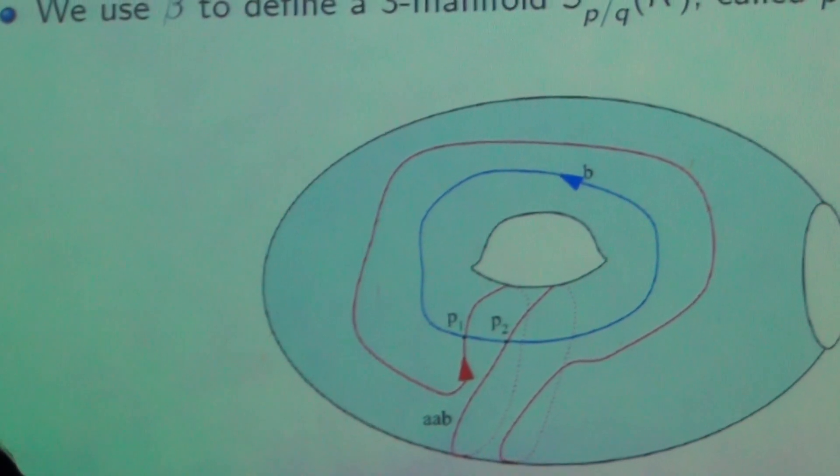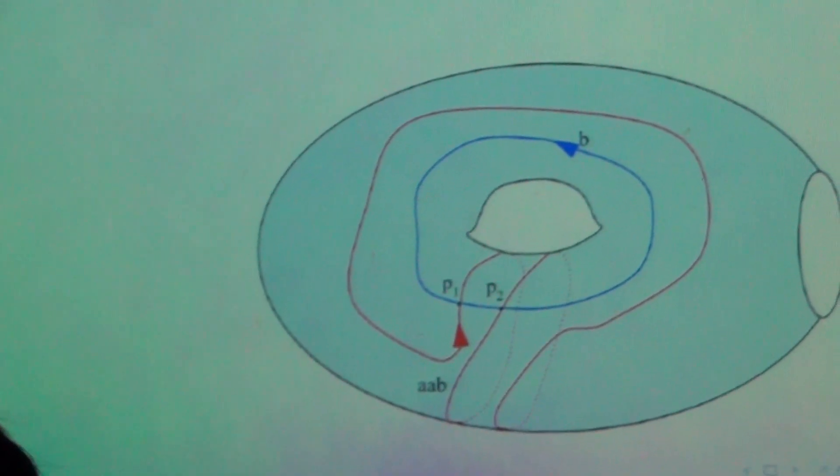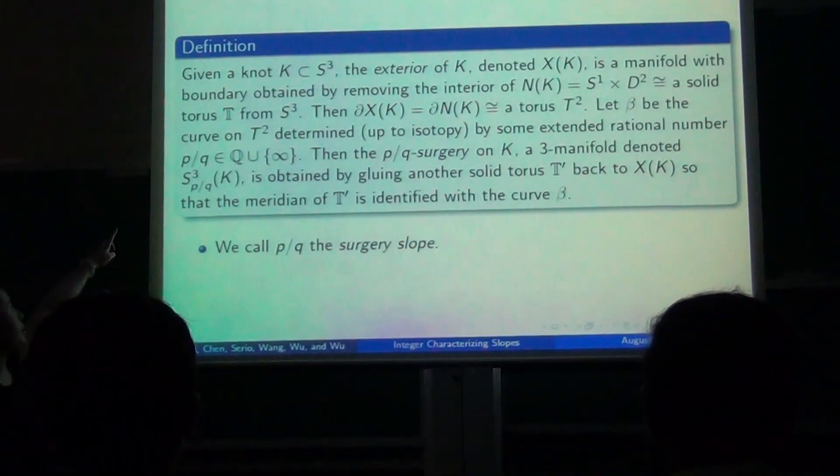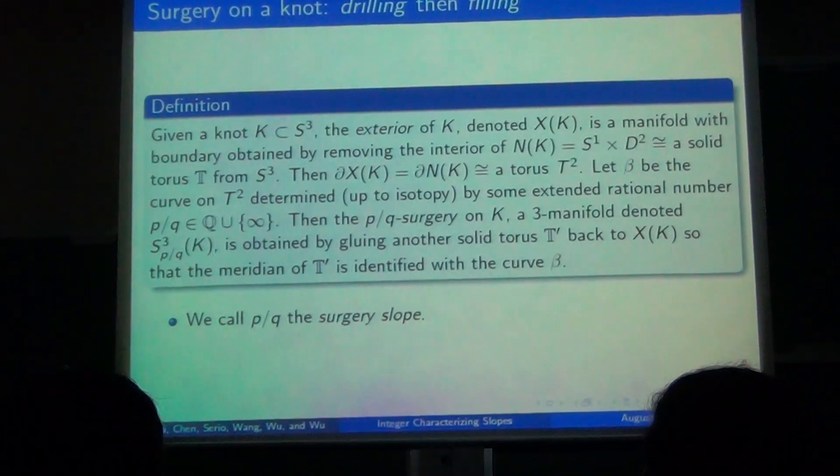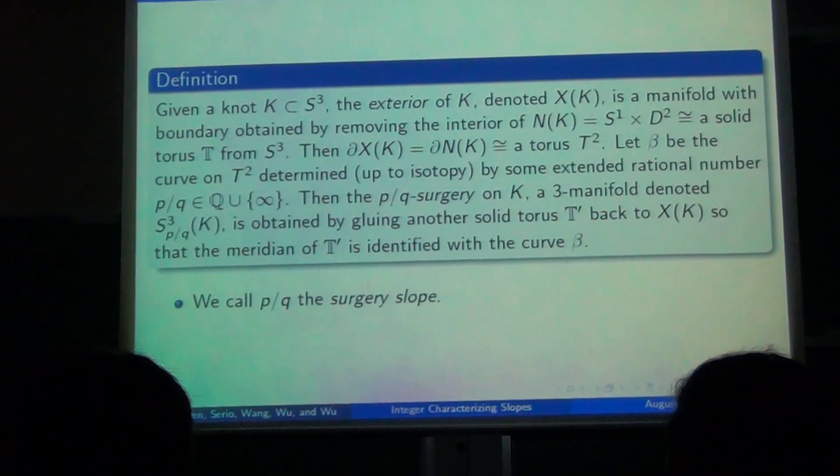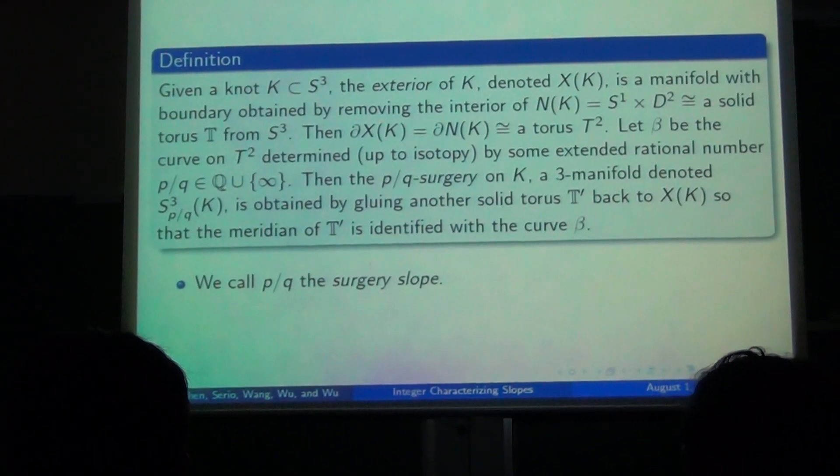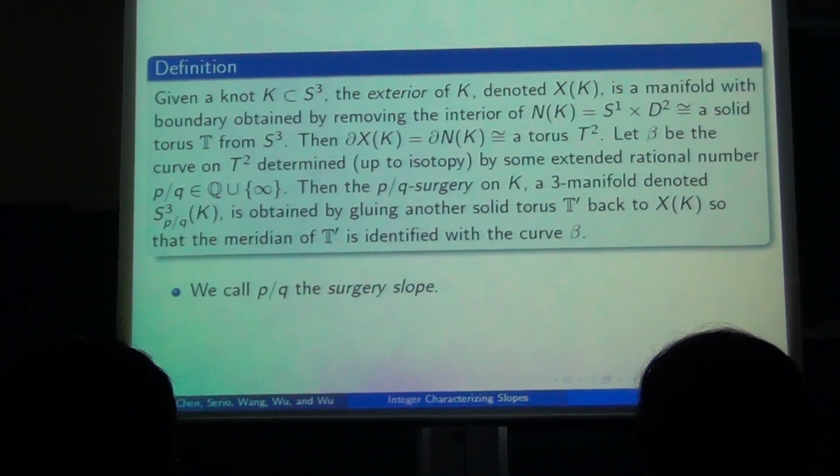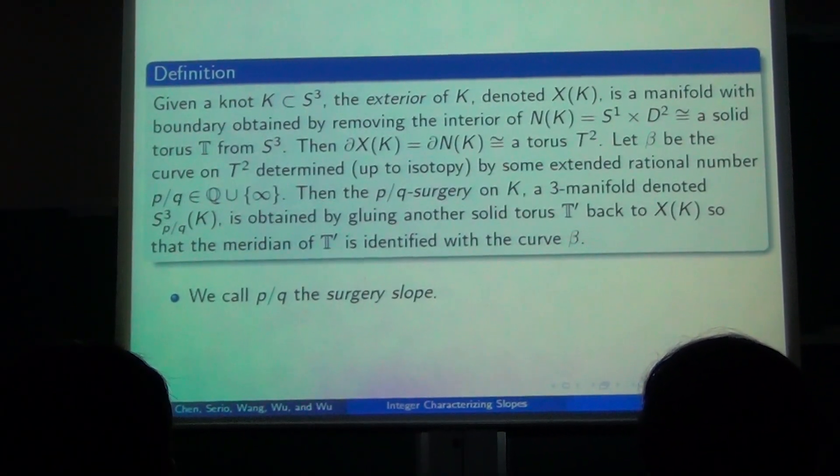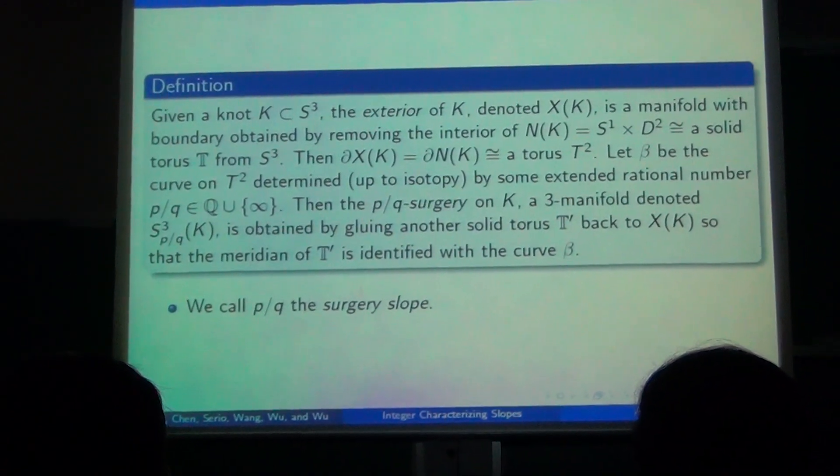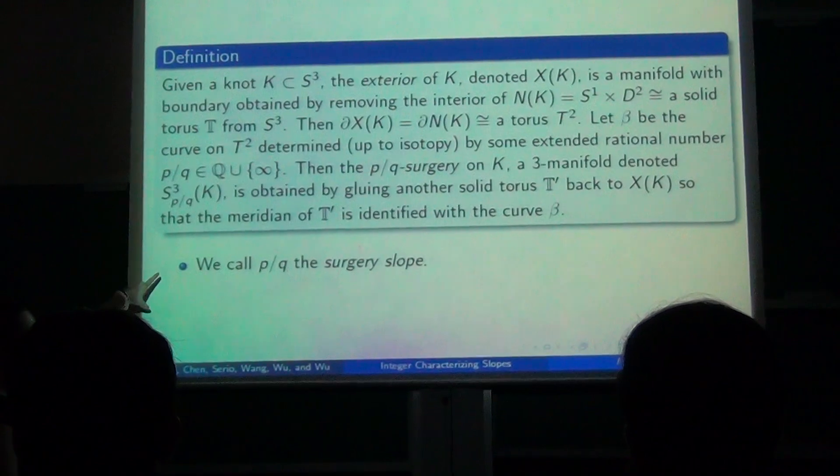So we can use the curve to define a three-manifold that's called p/q surgery on K. And here's a formal definition of surgery, but intuitively, it's just you remove the interior of the neighborhood of K, and you get a cavity there, and you glue a new solid torus back by identifying the meridian of a new solid torus with a curve like β specified by some extended rational number p over q. And we call p over q the surgery slope.